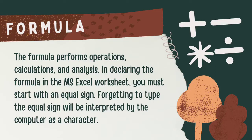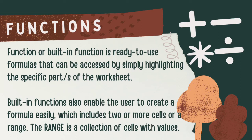A formula performs operations, calculations, and analysis. In declaring a formula in the MS Excel worksheet, you must start with an equal sign. Forgetting to type the equal sign will be interpreted by the computer as a character. A built-in function is a ready-to-use formula that can be accessed by highlighting specific parts of the worksheet, enabling users to create formulas easily which include two or more cells or a range. The range is a collection of cells with values.